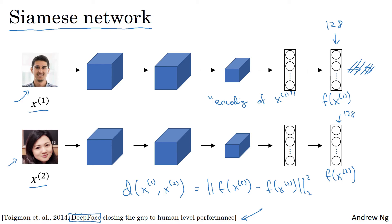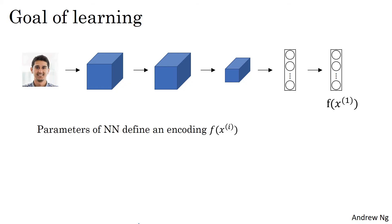So how do you train this Siamese neural network? Remember that these two neural networks have the same parameters. So what you want to do is really train a neural network so that the encoding that it computes results in a function d that tells you when two pictures are of the same person. So more formally, the parameters of the neural network define an encoding f of xi. So given any input image xi, the neural network outputs this 128 dimensional encoding f of xi.